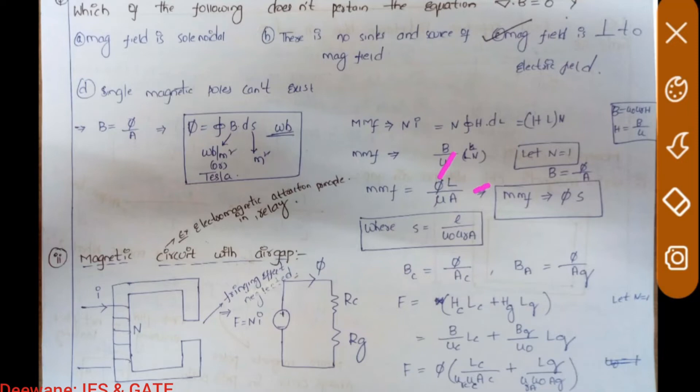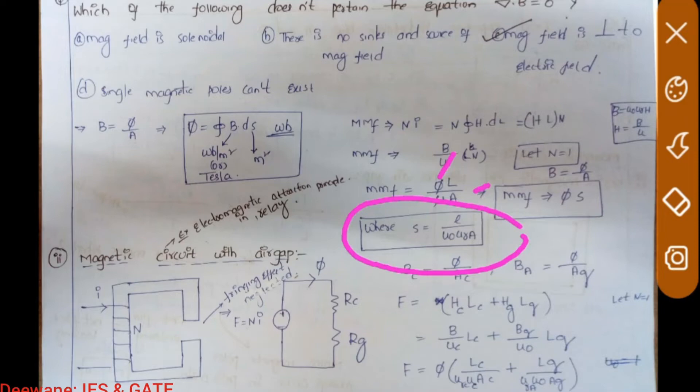The final point to note is that S = l/(μ₀μᵣA) for a continuous magnetic circuit. Now let's take the second case: a magnetic circuit with a single air gap.